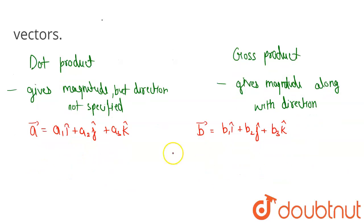So the dot product of these two vectors will be a1 b1 plus a2 b2 plus a3 b3.